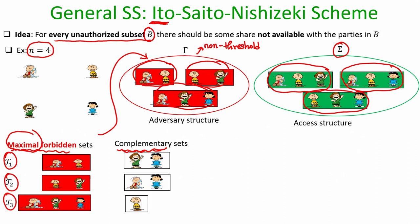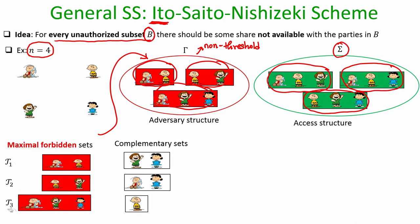Note that these complementary sets are not necessarily members of the access structure. For instance, two parties may also constitute a potential forbidden set because a larger subset of those parties is already listed as tau_3. So do not get the impression that complementary sets constitute authorized subsets — they are simply the set-theoretic complements with respect to the set of parties.